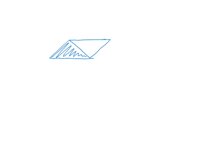The last shape we'll look at is a triangle. A triangle is half of a parallelogram — if we take a parallelogram and cut it in half, the resulting figure is a triangle. Since the area of a parallelogram is base times height, to find the area of a triangle we take half that area. So our formula is A equals one-half times B times H.